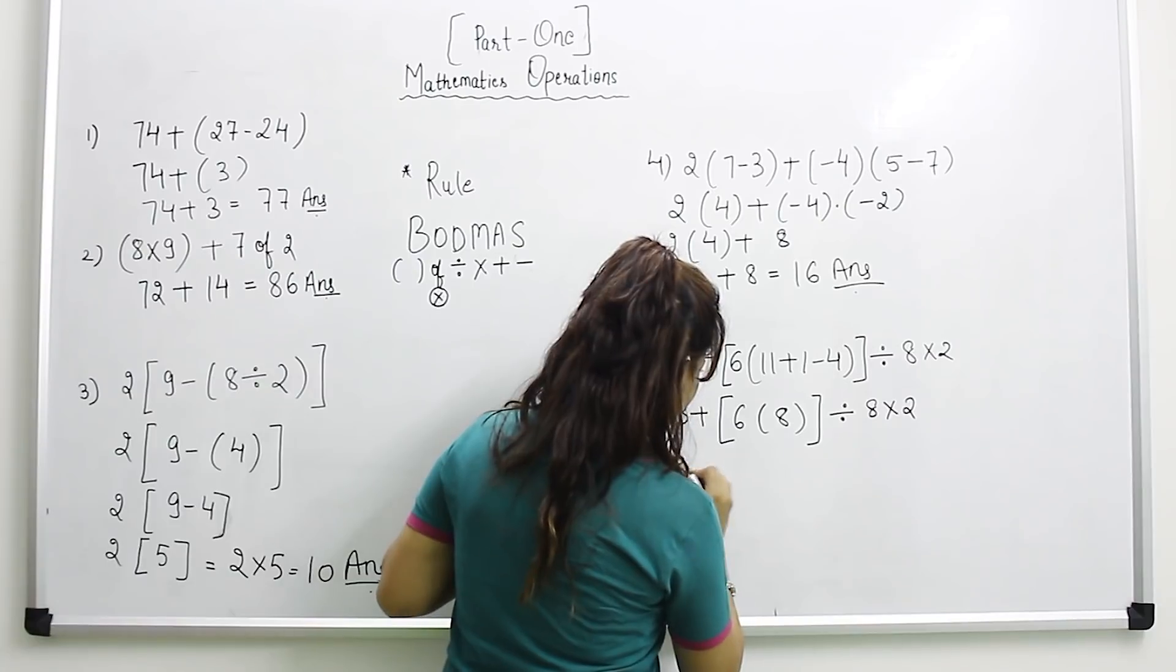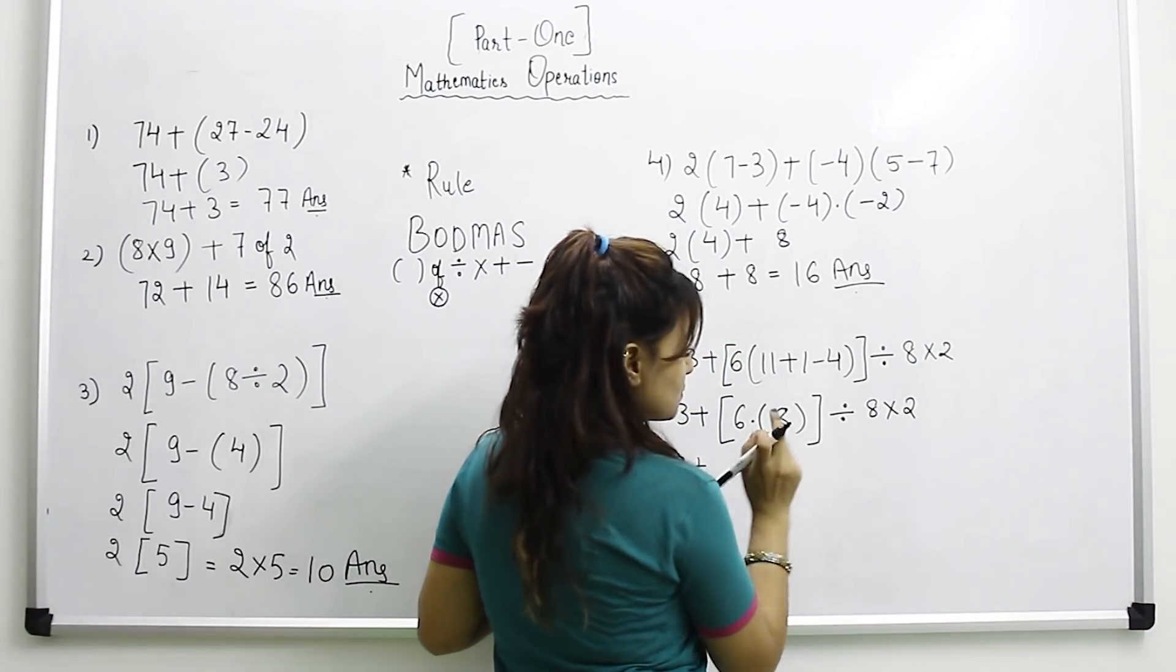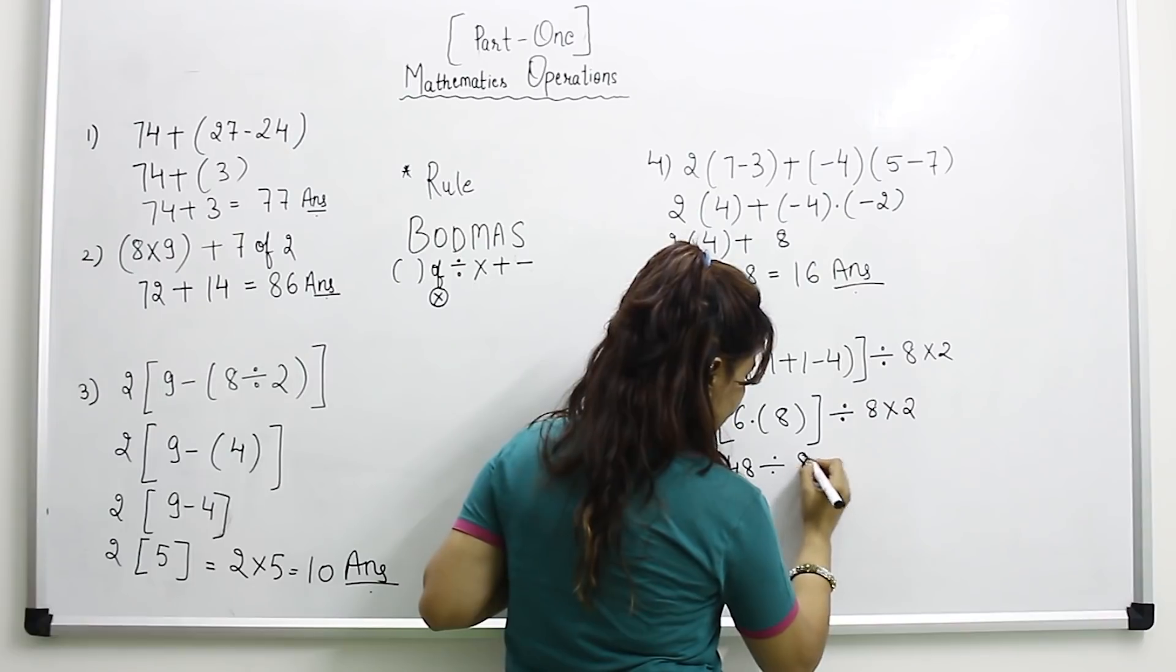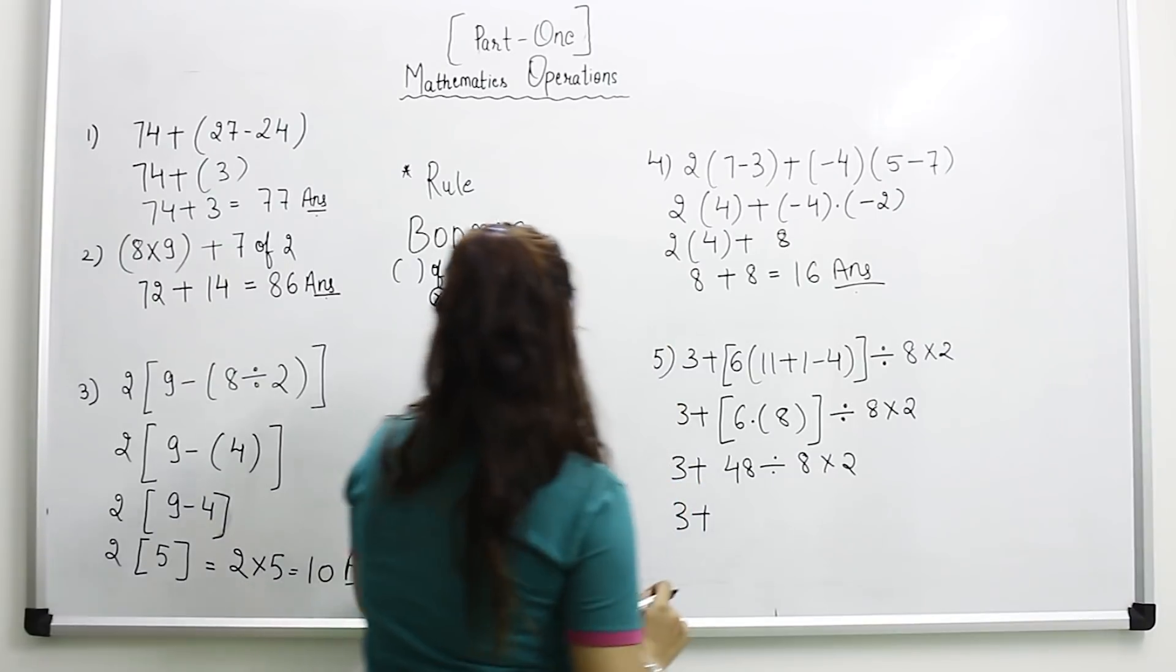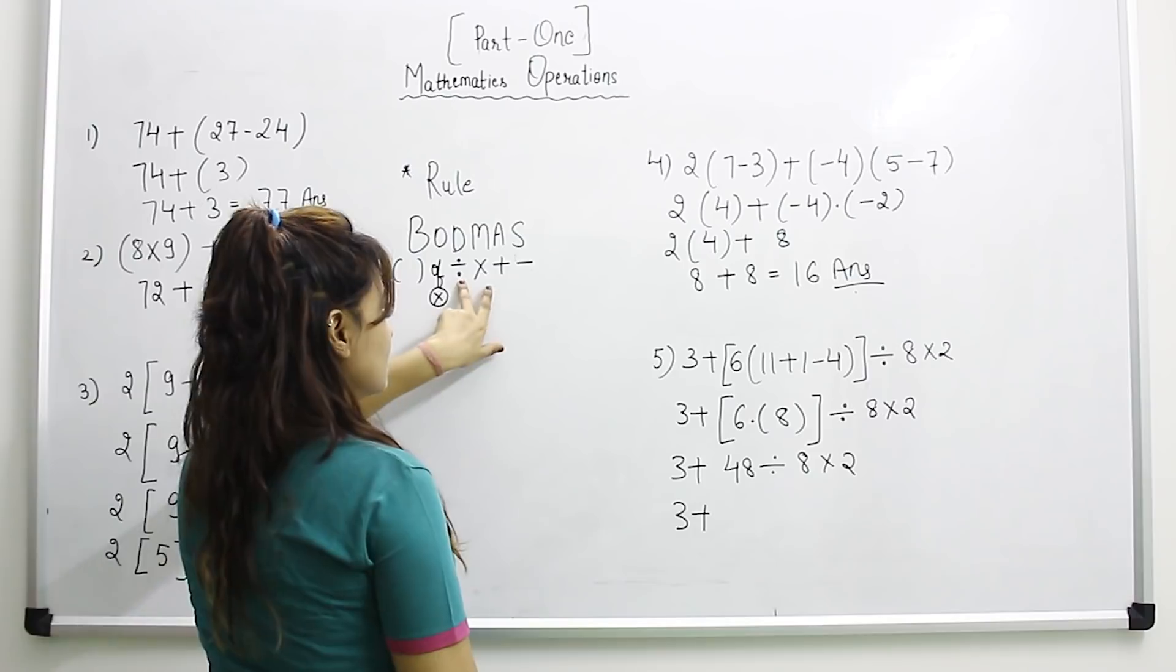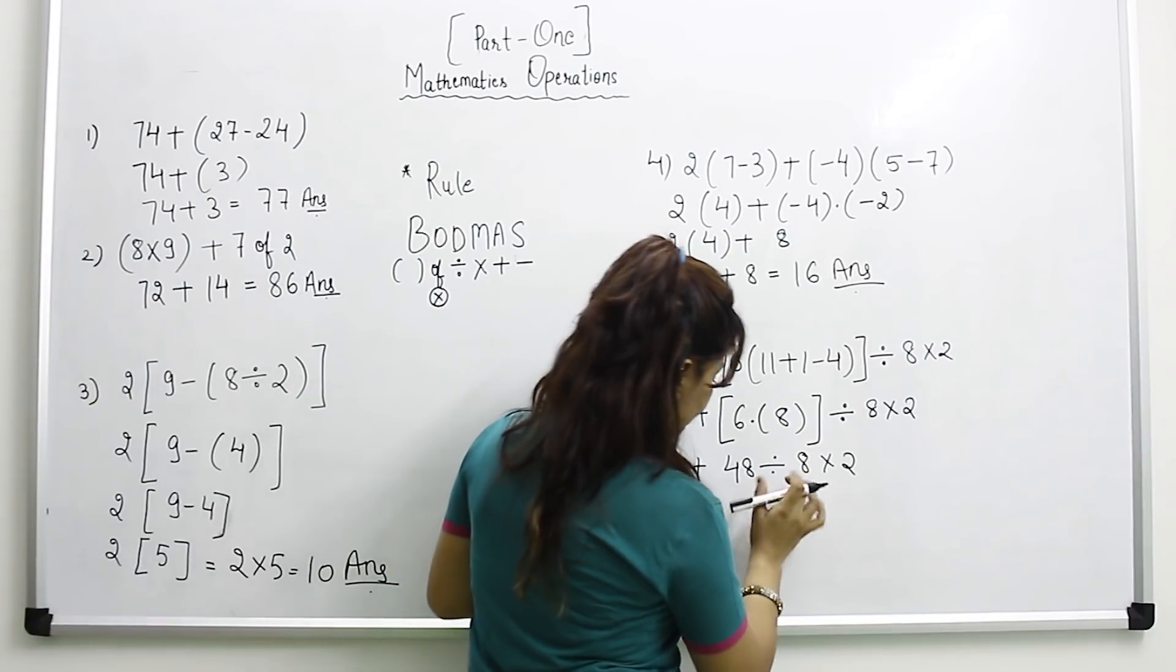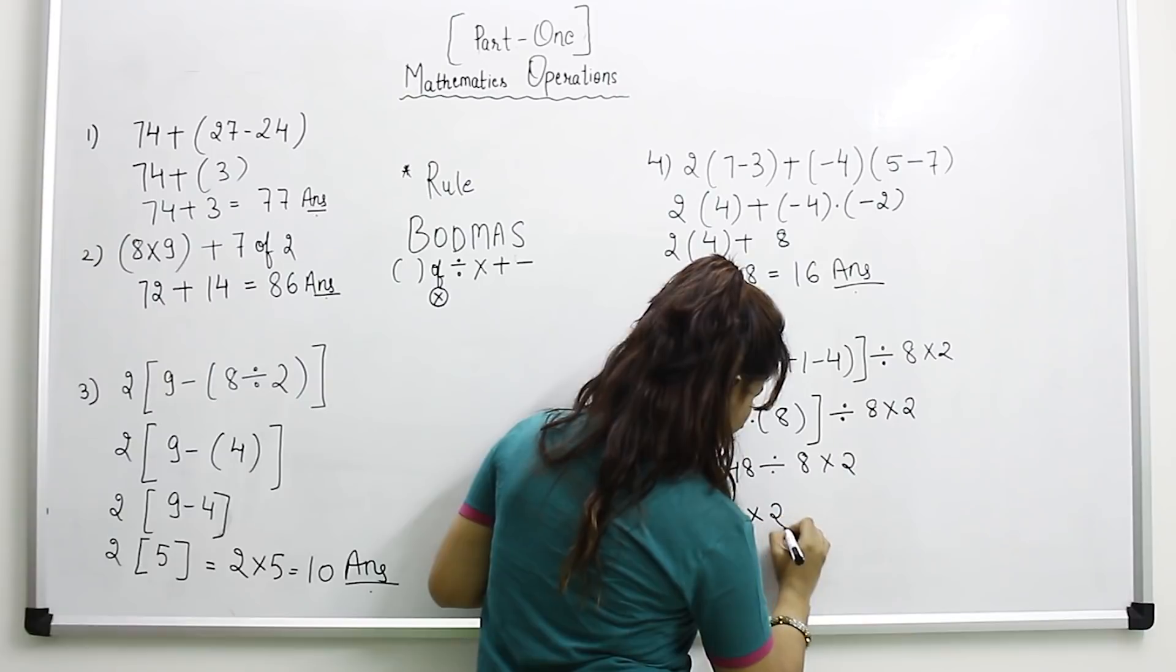3 plus, there is no sign, it indicates multiplication. 6 into 8 equals 48 divided by 8 into 2. Now, 3 plus, and as per the rule, we have to solve division before multiplication. So divide these two and we get 6 into 2.